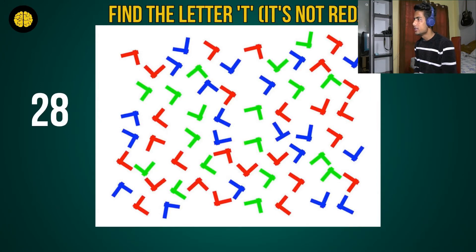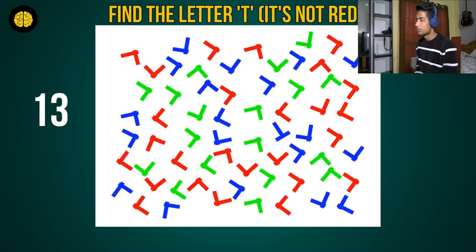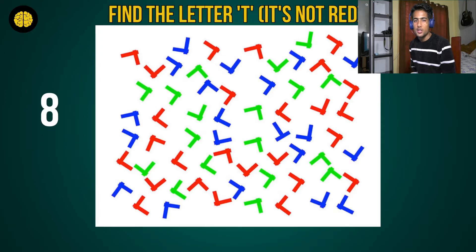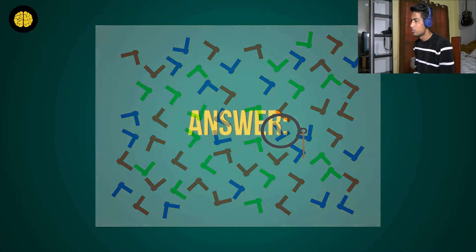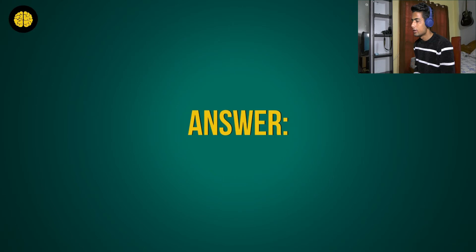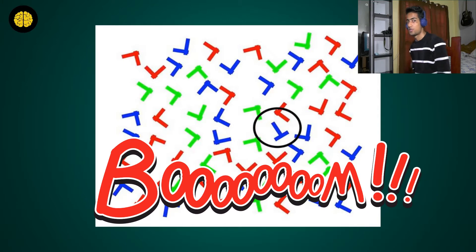Okay, here we go. Number one: find the letter T. So it's not red — there's a little T. I get it, it's a blue one, it's a blue one in the middle. See guys, how many you get right — you can tell me in the comments, you can play along with me as well. Yeah, that's the blue one. I was right!